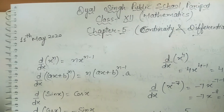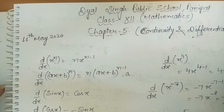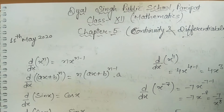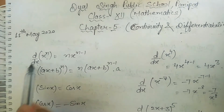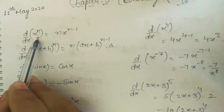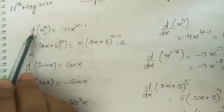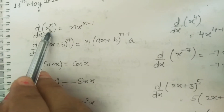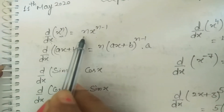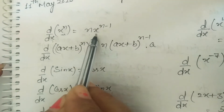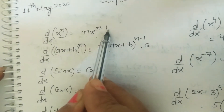Hello everyone. Today we will discuss the differentiation of some functions. Suppose x raised to power n — the derivative of x^n with respect to x is n·x^(n-1).